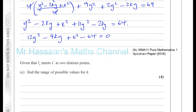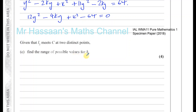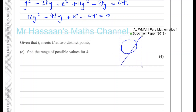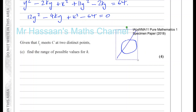For part C: given that L2 meets C at two distinct points, find the range of possible values for k. The equation 12y² − 4ky + k² − 64 = 0 tells us the y-coordinates where L2 meets curve C. If we think geometrically — at some values of k the line won't intersect the curve, as a tangent it meets at one point, and for a range of k-values it will meet at two distinct points. We need to find that range.